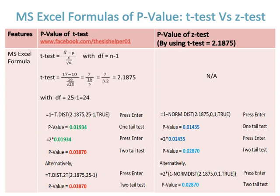We compare both MS Excel formulas of calculating p-value of t-test and z-test. But keep in mind, I used t-test value of 2.1875 with normal distribution as well, by using negative and positive cumulative area under standard normal curve, in order to check differences in p-values.